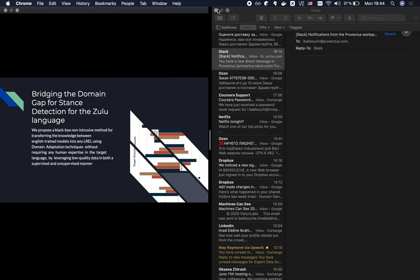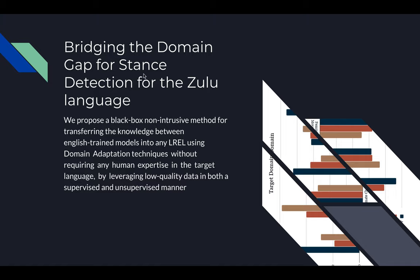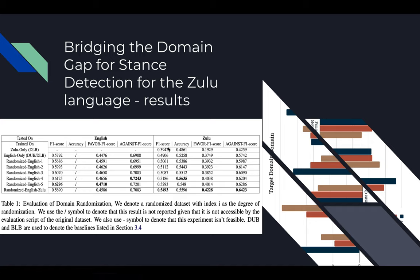We then took our domain adaptation architecture and applied it to natural language processing, specifically for stance detection. We proposed a new method to transfer knowledge from English-trained models into less-resourced and endangered languages — for our example we took Zulu, an African language. Without any domain adaptation techniques we had a 0.39 F1 score, but with our method we raised it to 0.54, which is quite similar to the English test score, and is definitely an improvement on the Zulu dataset.